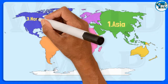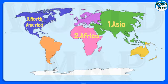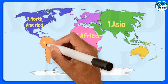Number 3: North America. It is the third largest continent on Earth in terms of area and fourth largest in terms of population. It comprises 23 nations and is entirely located in the Northern Hemisphere.